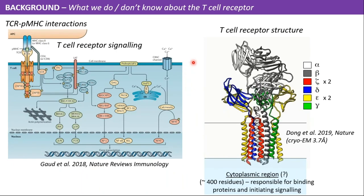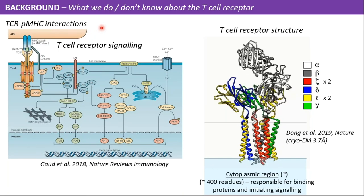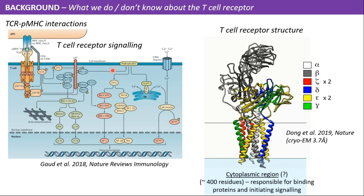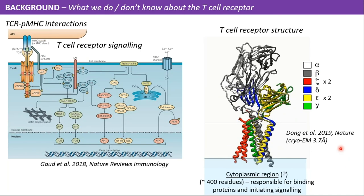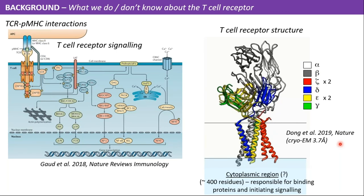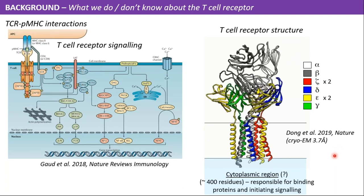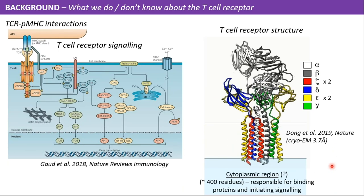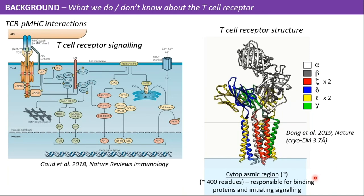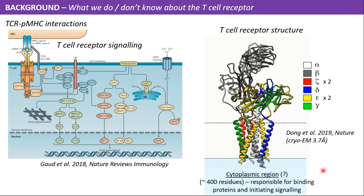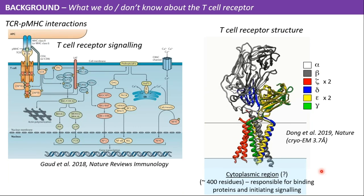Many experimental and computational studies have addressed T cell receptor and pMHC interactions, and we have good knowledge of the T cell signaling pathway. We also know the TCR structure from a cryo-EM study that solved it at 3.7 angstroms; however, the authors could not solve the cytoplasmic region because it is unstructured and highly dynamic. This cytoplasmic region is important: it constitutes 400 out of 1500 residues — nearly one-third of the structure — and is responsible for binding signaling proteins.